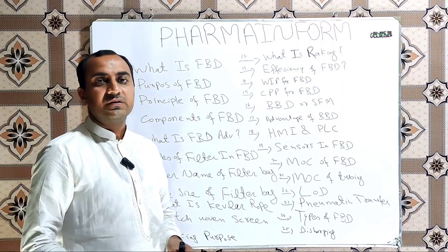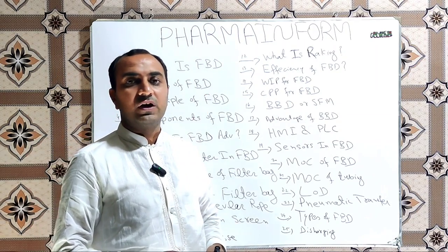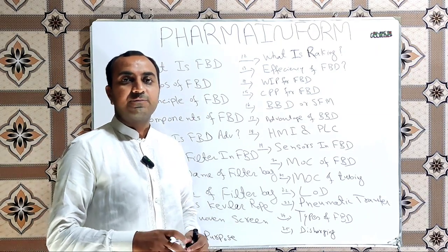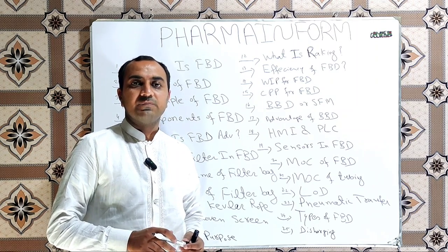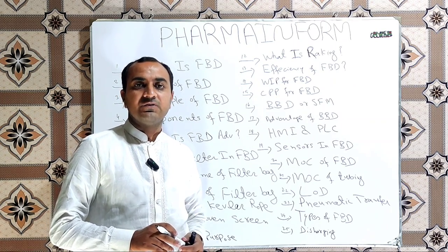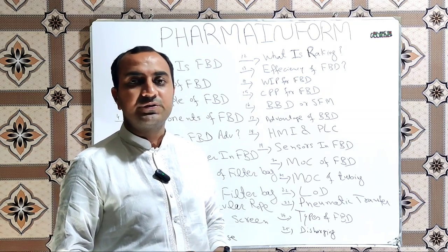What is FBD? FBD is fluidized bed dryer. F means fluidized, B means bed, and D means dryer. It is an abbreviation and its full form is fluidized bed dryer.